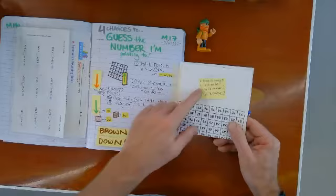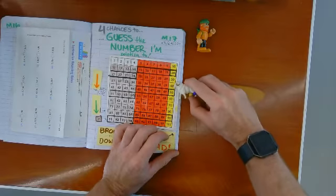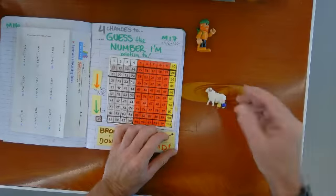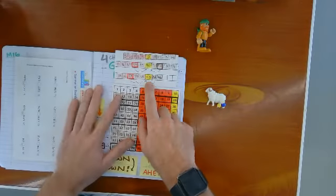So when the ram says I'm thinking of a number and it rounds to 40, now if a number rounds to 40, if it rounds to 40...